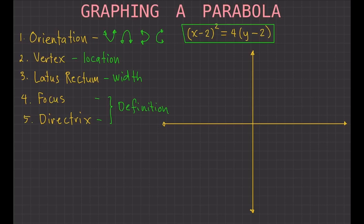In this equation, the variable that is being squared is x — this is x and it is squared. Y does not have a squared, so it is x that is being squared. Therefore, the parabola opens up or down.